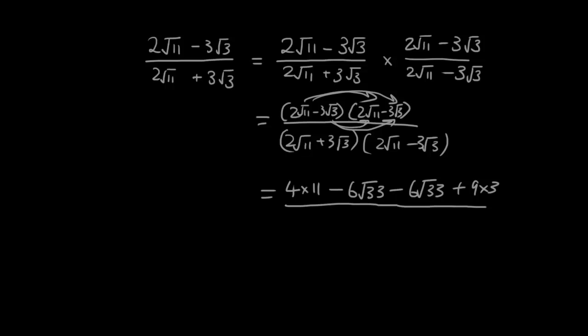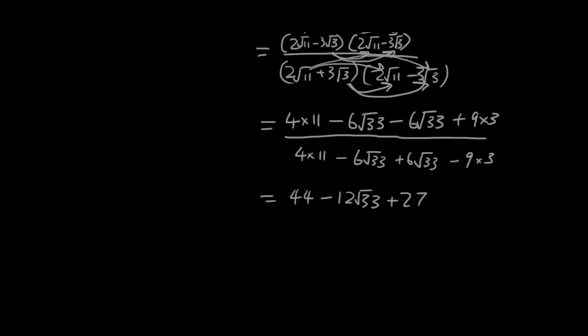So I have 4 times 11. I know that the middle 2 terms are going to be cancelled out anyway, but I'll just show you. So I'm doing this by this and then this by this. So that's minus 6 square root of 33, and then this one by this one, plus 6 square root of 33. Last pair, minus 9 square root of 9 times 3.